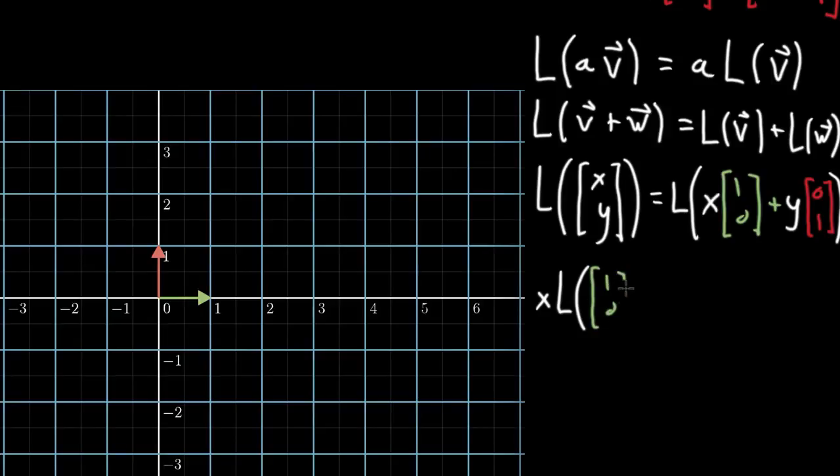And I'll show you geometrically what this means in just a moment, but I want to get all the algebra on the screen, plus y times the transformed version of 0, 1, 0, 1.